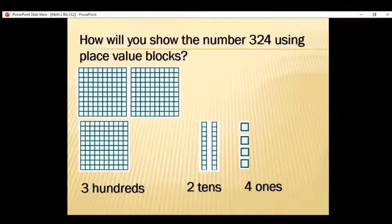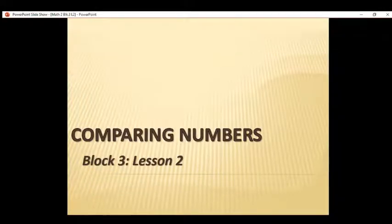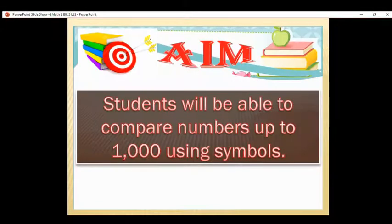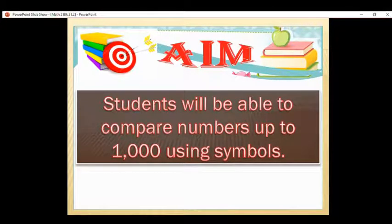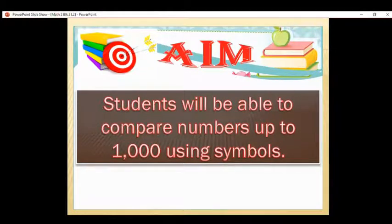So today we are working with place value blocks in comparing numbers. This would be our lesson for today: Block 3, Lesson 2 — Comparing Numbers. Our aim: students will be able to compare numbers up to 1,000 using symbols — less than, greater than, or equal. Please pause the video to copy our aim for today in your notebook.